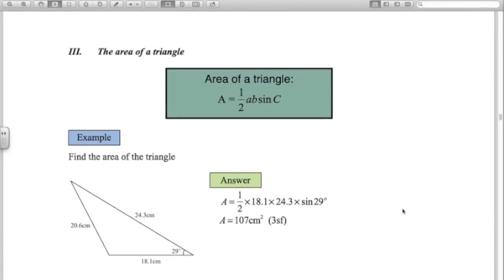Third area of revision is the area of a triangle. Formula half AB sine C. So kind of like the cosine rule we just looked at we're talking about the two sides and the angle in between. So the area of this triangle here is a half 18.1 times 24.3 times sine of 29. We don't need the length of this side over here. So two sides and the angle in between are the ones involved in this formula here for the area of a triangle.